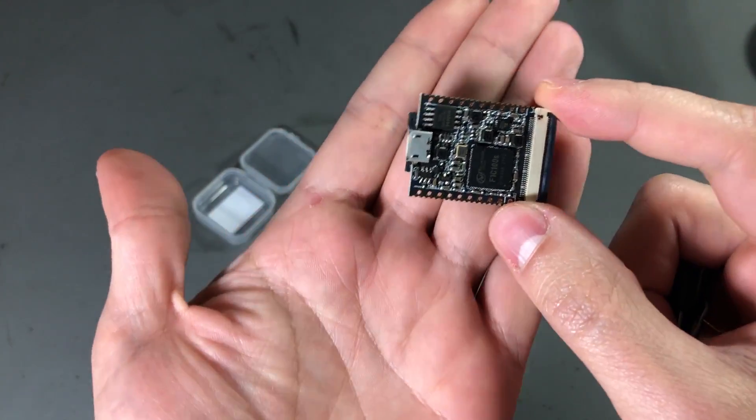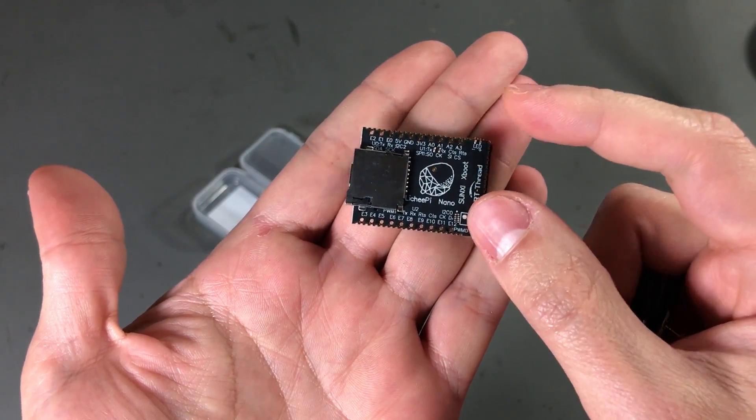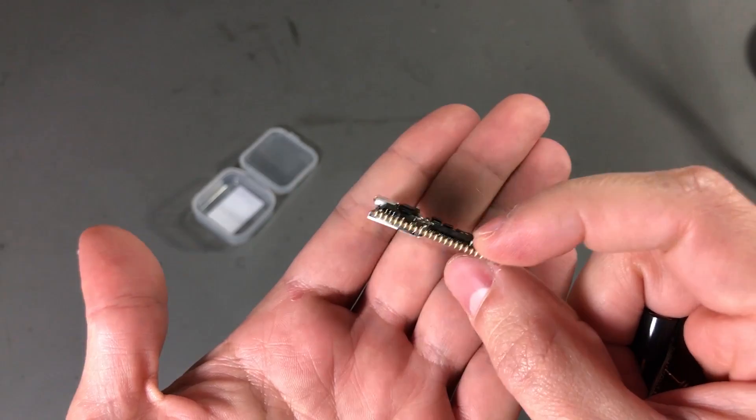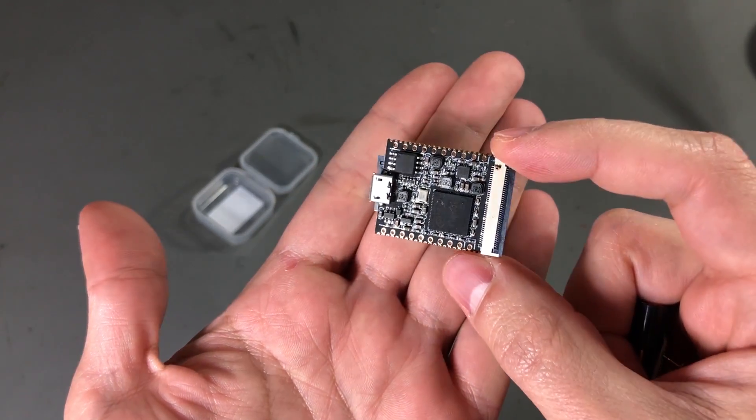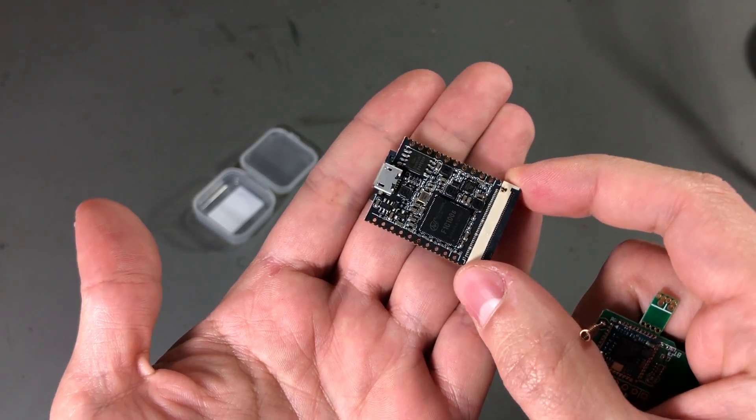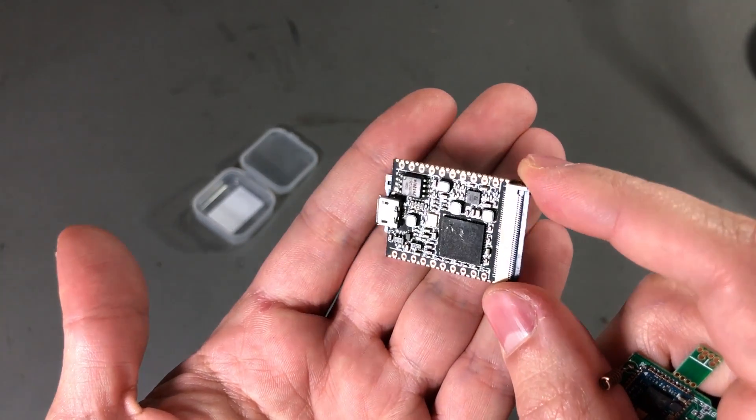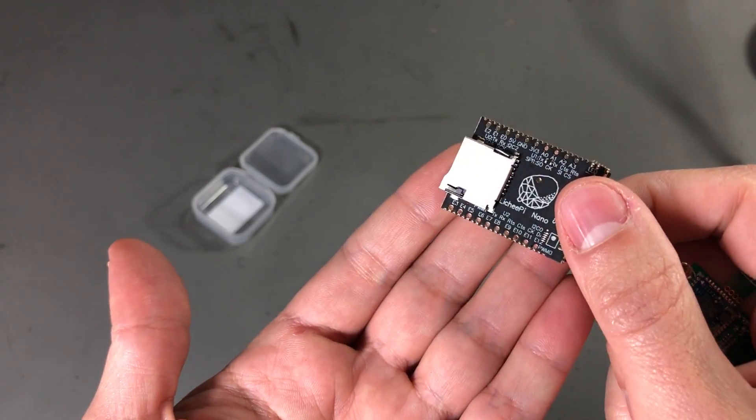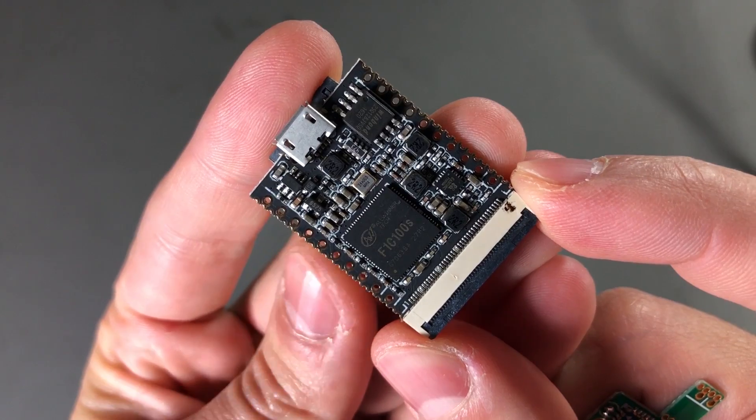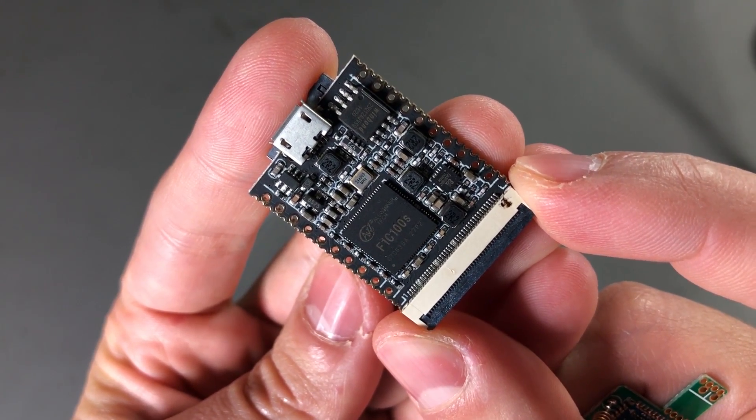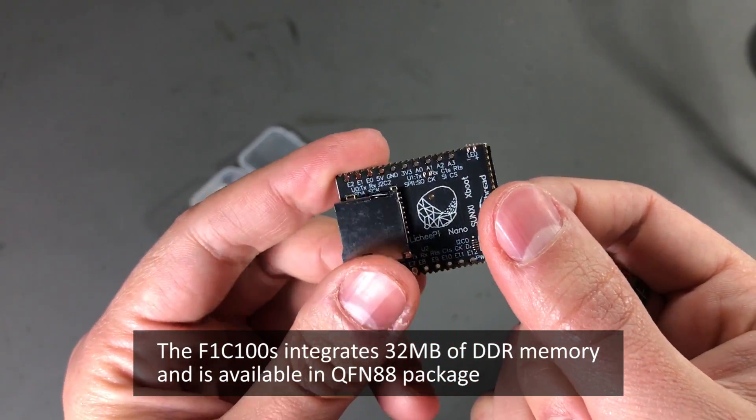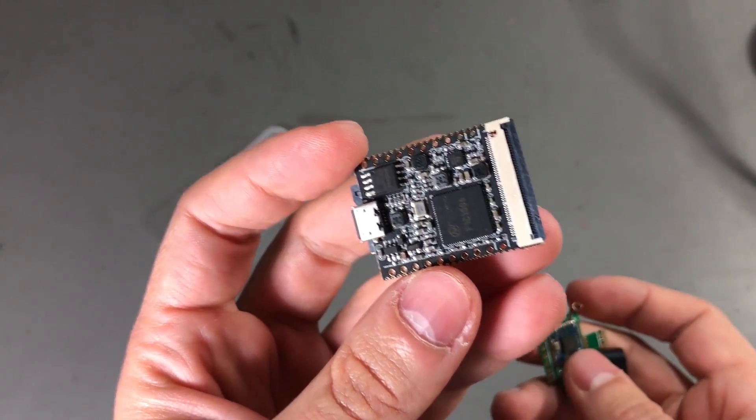So the main module is about 35 by 27 millimeters. And it has these castellated holes on the sides. These provide a bunch of IOs and connectivity. And this particular kit that I got features a 16 megabyte flash chip and 32 megabytes of DDR memory. The processor is the F1C100S from Allwinner. And this is a processor based on R9 architecture and it runs at 900 megahertz.